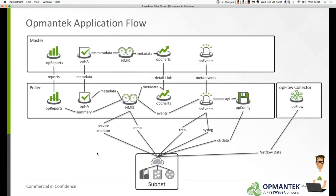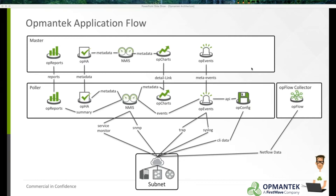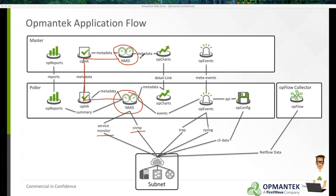Drilling into how OPHA works at a more granular level, you'll notice the polling server in the middle tier. NMIS is capturing information via both SNMP and WMI and also doing all of your service monitoring. That information is passed to OPHA on the polling server and then OPHA synchronizes it with the master. OPHA on the poller can either push information to the master on a schedule or the master can pull that information up, making it available to OP Charts.